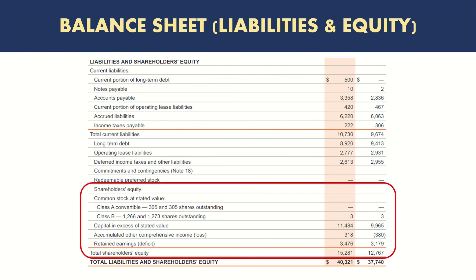As mentioned, you can find equity in the balance sheet, usually in the liabilities and equity section. You can see here 'total liabilities and shareholders' equity,' and these are the line items for equity which are represented in the balance sheet.